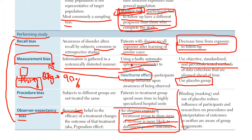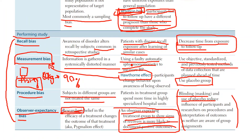The way you mitigate both types of bias is by blinding and using a placebo. Blinding means researchers don't know which group is taking which drug. This prevents them from treating different groups differently and prevents them from putting their own expectations into the study.